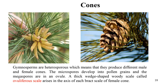Gymnosperms are heterosporous, which means they produce different types of male and female cones. The microspores develop into pollen grains, while the megaspores develop into ovules. The thick wedge-shaped woody scale called the ovuliferous scale arises in the axil of each bract scale of the female cone.